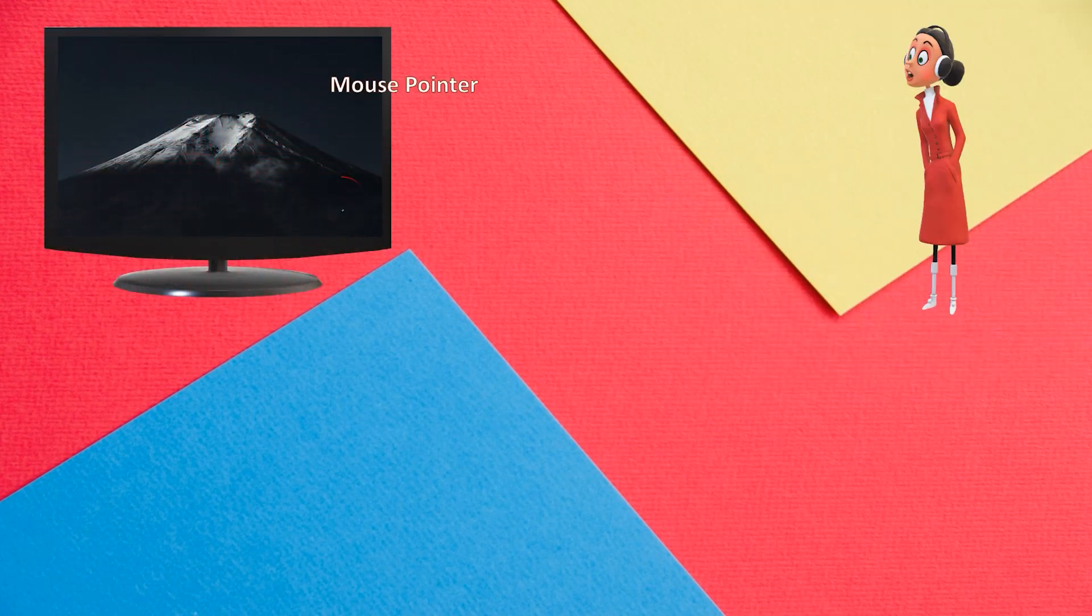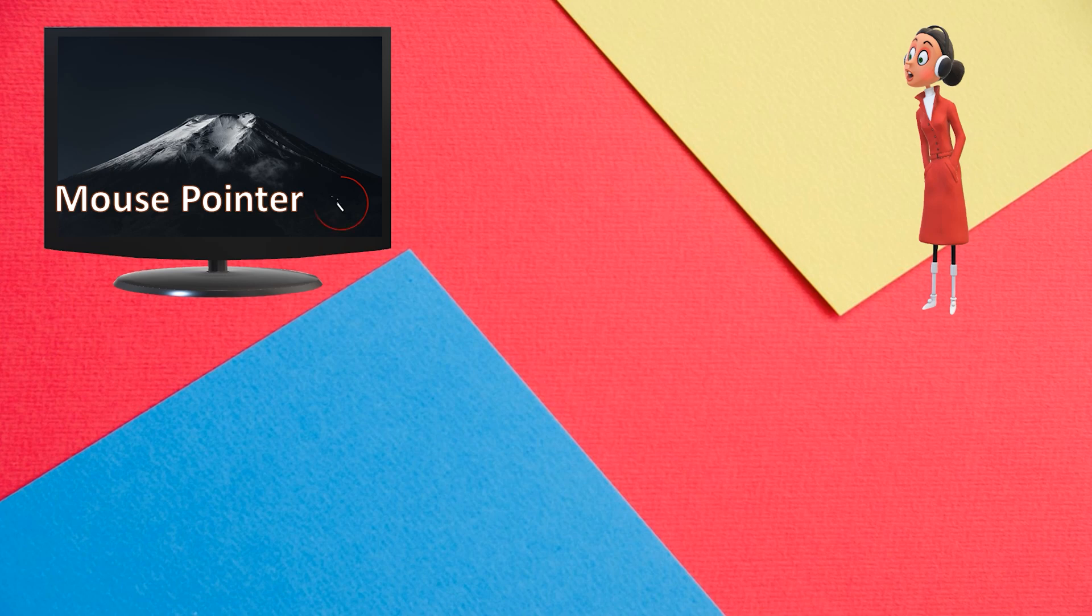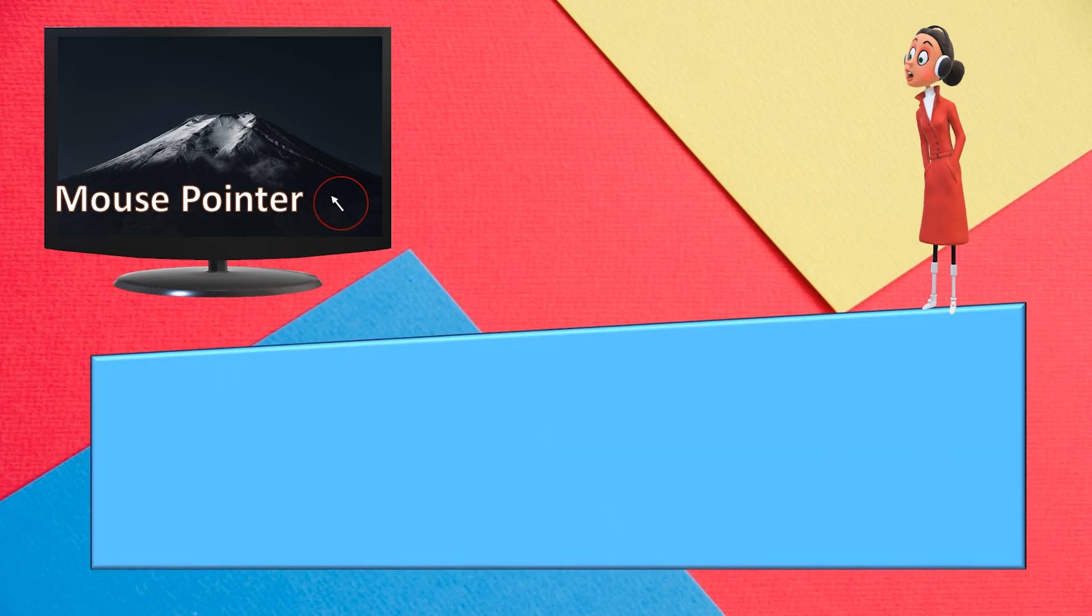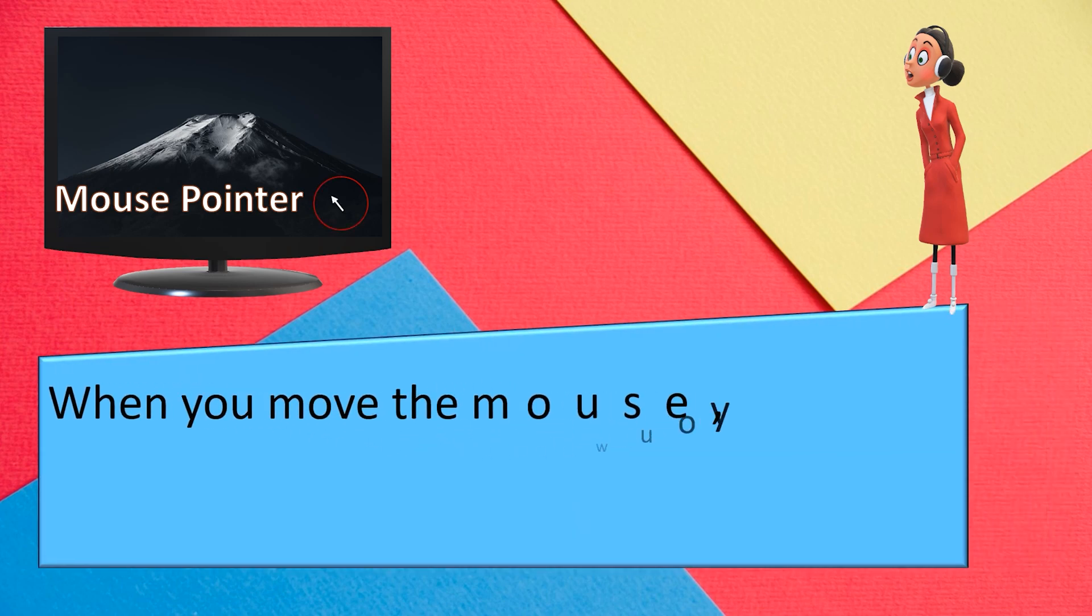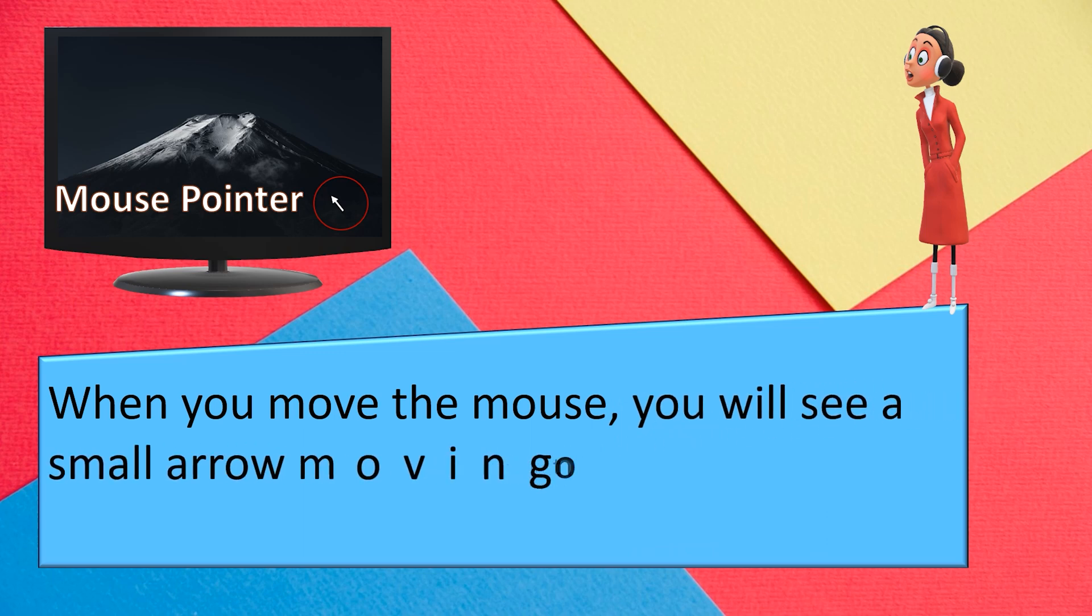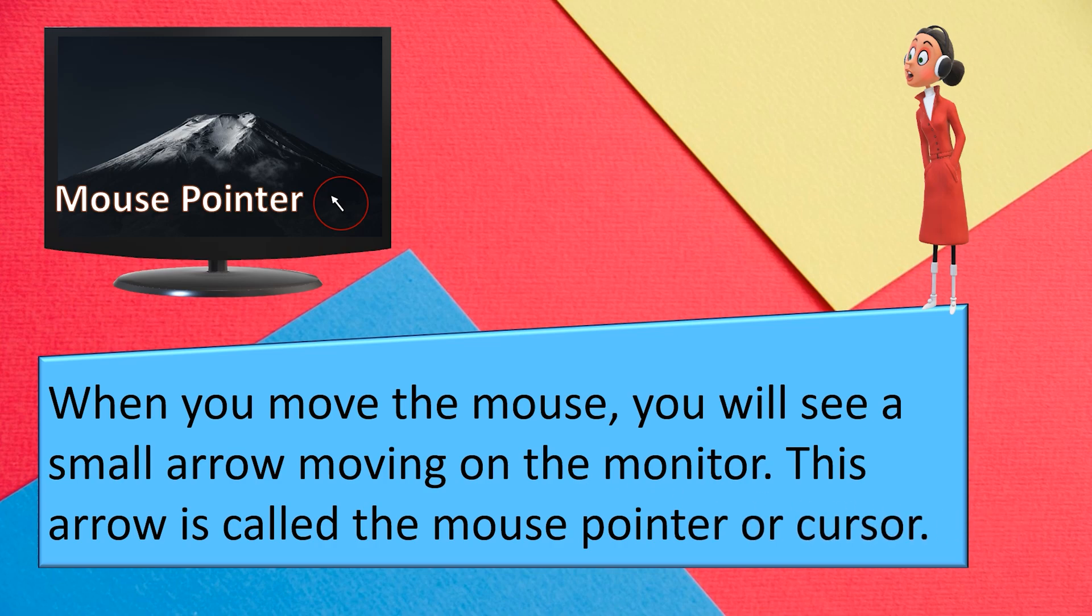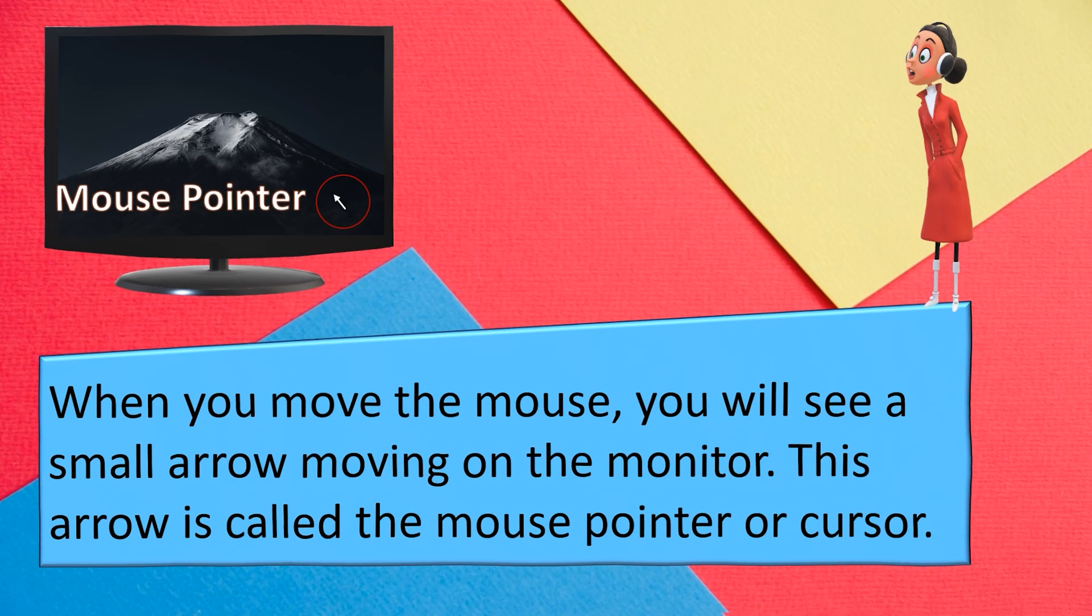Mouse Pointer. When you move the mouse, you will see a small arrow moving on the monitor. This arrow is called the mouse pointer or cursor. Look at the picture.